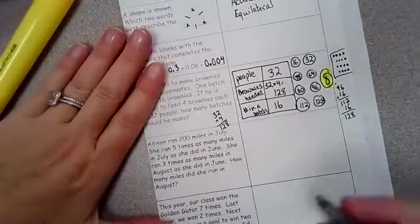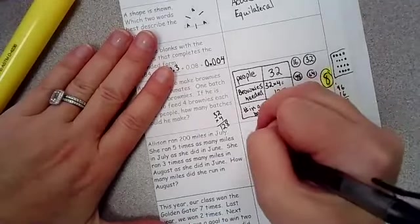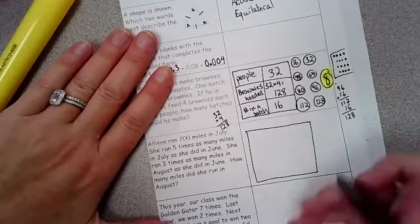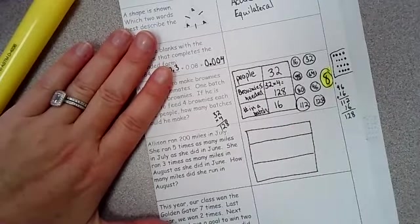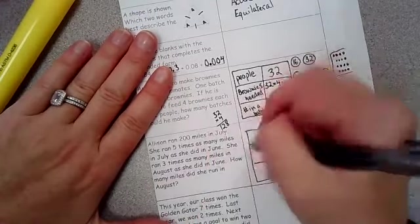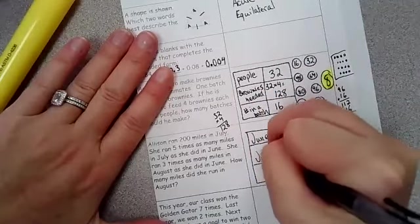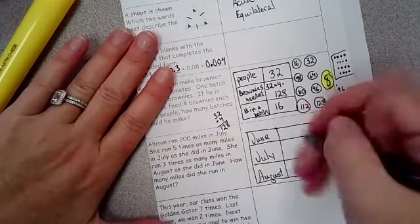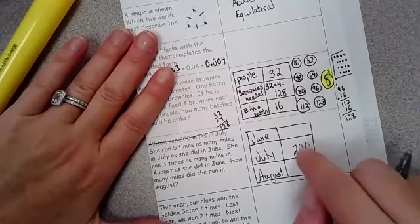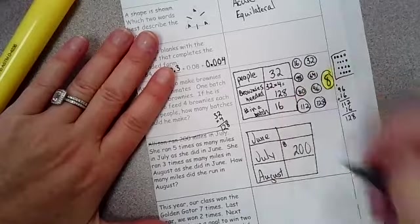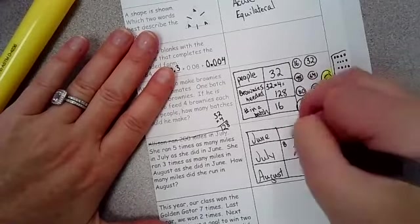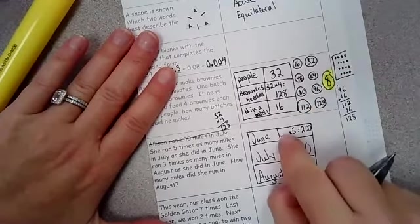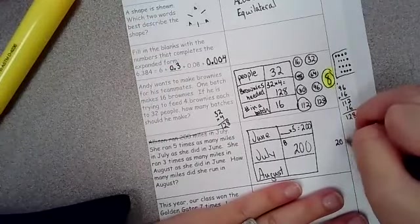Next one. Allison ran 200 miles in July and she ran 5 times as many miles in July as she did in June. So I'm going to draw my chart out here. It says she ran 3 times as many in August as she did in June. So we've got a couple of different months here. So let's label our months. We've got July, June, July, and August. So I'm going to write June, I'm going to write it out. July and August. And then I'm going to start filling in my chart. All right. She ran 200 miles in July. Simple. 200. Cross it out.